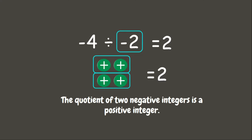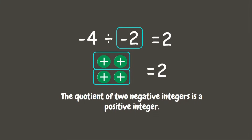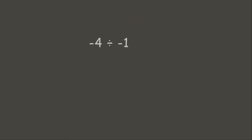As you can see, when we are dividing two negative integers our answer will always be a positive integer. Let us divide negative 4 by negative 1. When dividing two negative integers, we simply divide them and the answer will be positive, so negative 4 divided by negative 1 is positive 4.